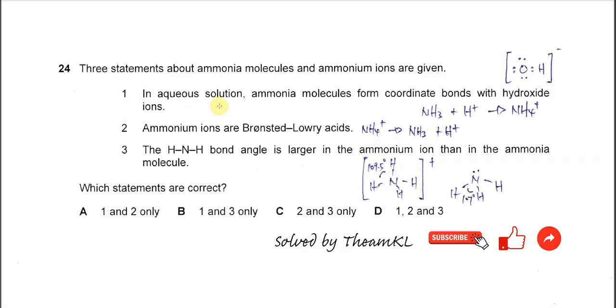In aqueous solution, ammonia molecules form coordinate bonds with hydroxide ions. So this one is not going to happen because the hydroxide cannot gain the lone pair from this ammonia. The one able to form coordinate bonds with the ammonia is species like the hydrogen ion because it has empty orbitals.